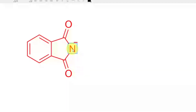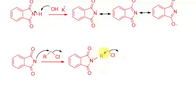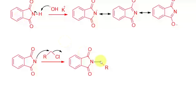In the next step, the resonance-stabilized anion acts as a nucleophile and reacts with an alkyl halide via an SN2 reaction. The nucleophile attacks the carbon of the alkyl halide, the leaving group Cl⁻ departs, and a new N–C bond forms. The negative charge disappears and Cl⁻ leaves as the new bond forms.